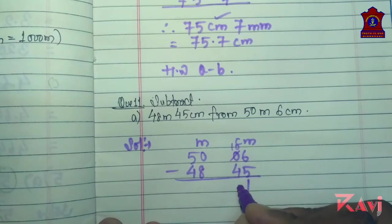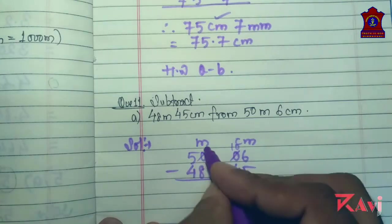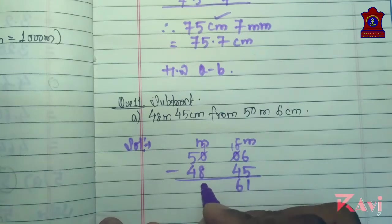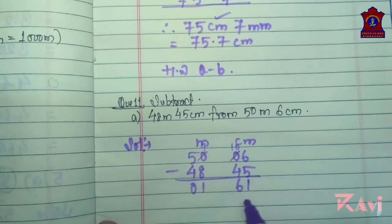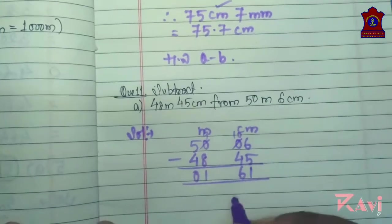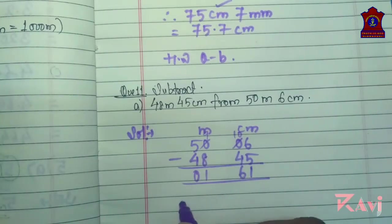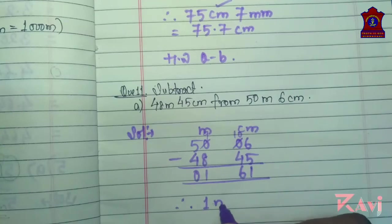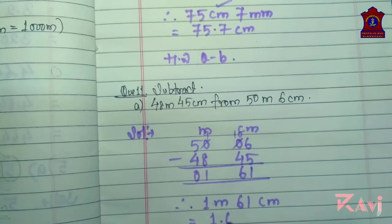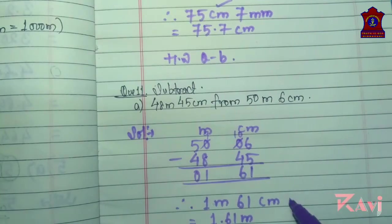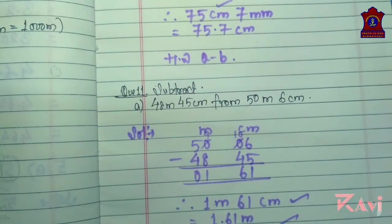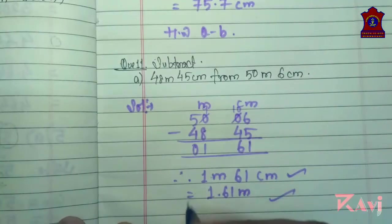We cannot subtract 4 from 0, so take 1. 1 is borrowed here, so this is 10. 10 minus 4 is 6. What is left here? 9. 9 minus 8 is 1. So the answer is here 1 meter 61 centimeters, or you can write 1.61 meters. You can write answer in both the ways. Like this you have to do question number B by yourself. Homework is question number B.